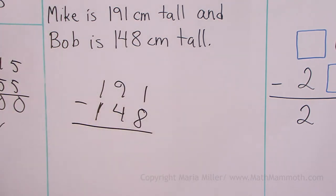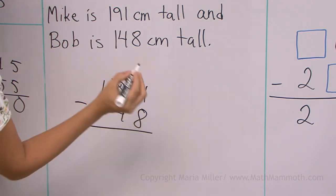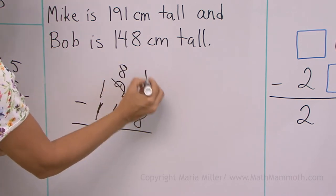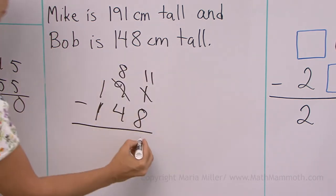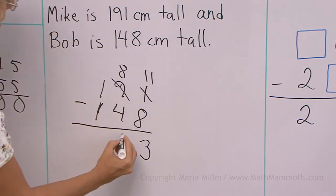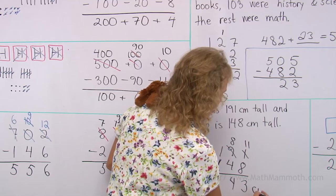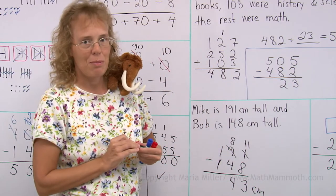Again, try to subtract quicker than what I'm doing the problem. 1 minus 8. I can't do that. So, I will regroup. Leave 8 tenths here. 11 here. Then 3. And then 4. 0. So, Mike is 43 centimeters taller than Bob.